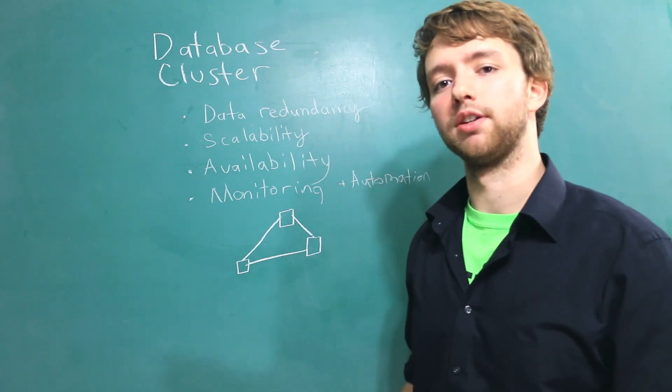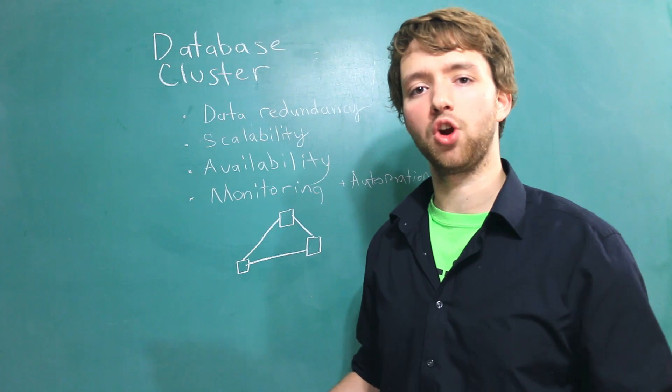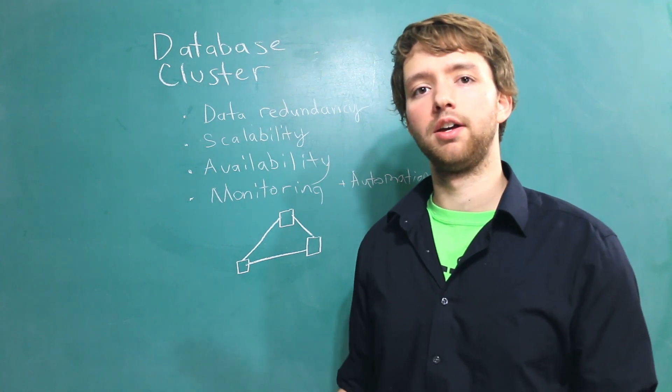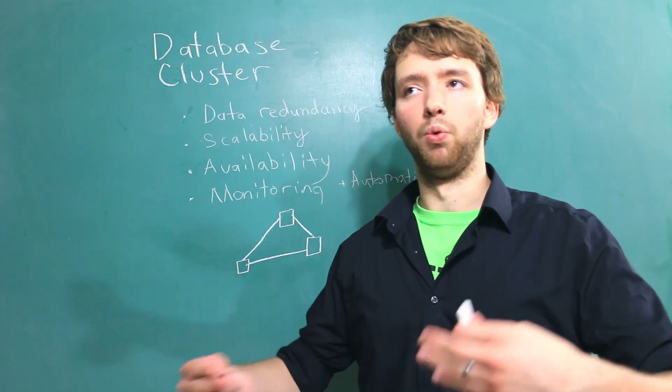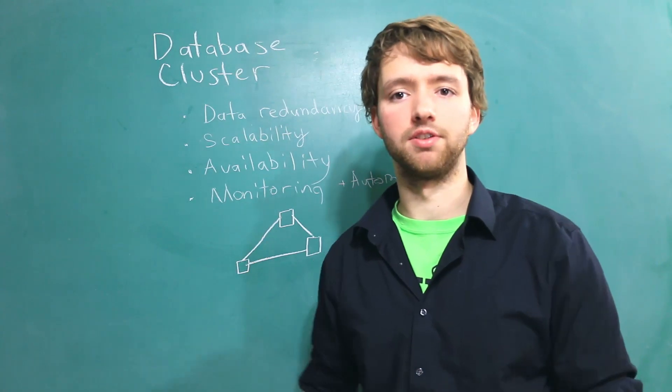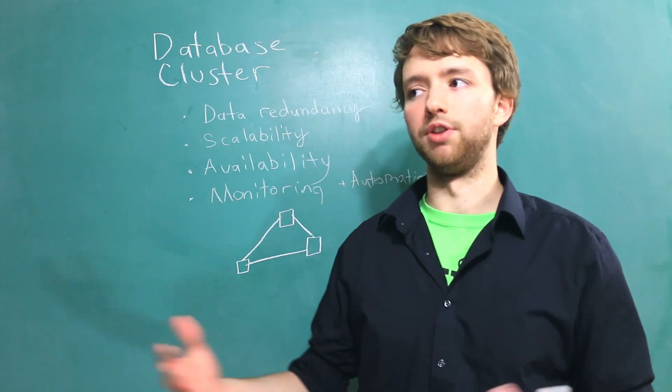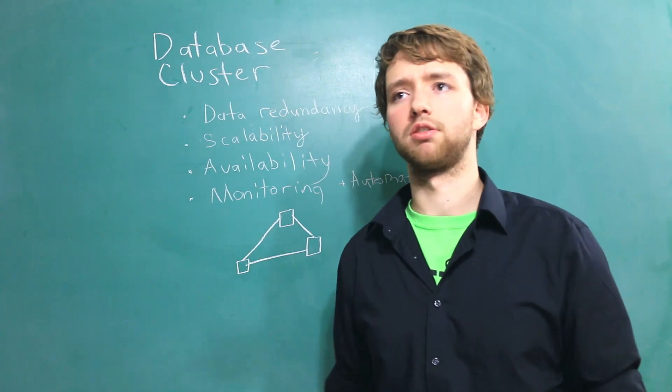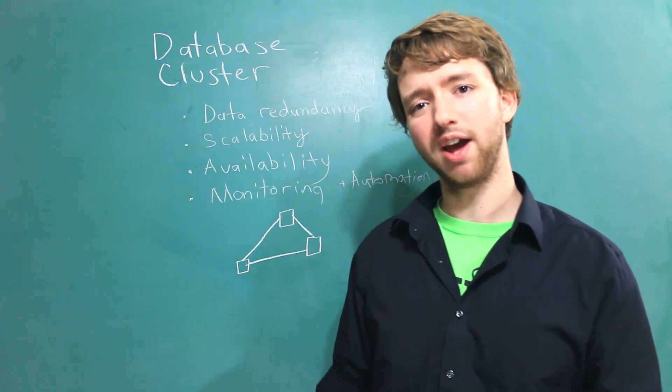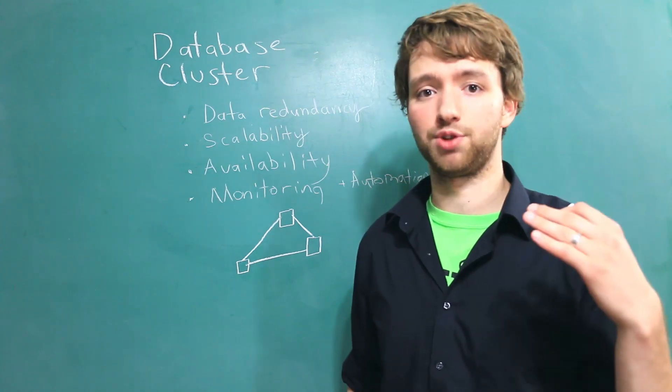That kind of data redundancy is when you have unnecessary duplicate data that can then, one can change and one can stay the same, for example, and then you have ambiguity because you don't know, are these two separate entries, or are these talking about the same thing, but one of them is incorrect, and it just gets really messy and confusing.